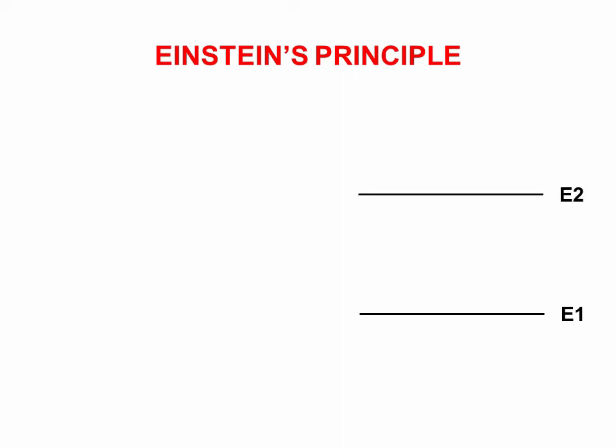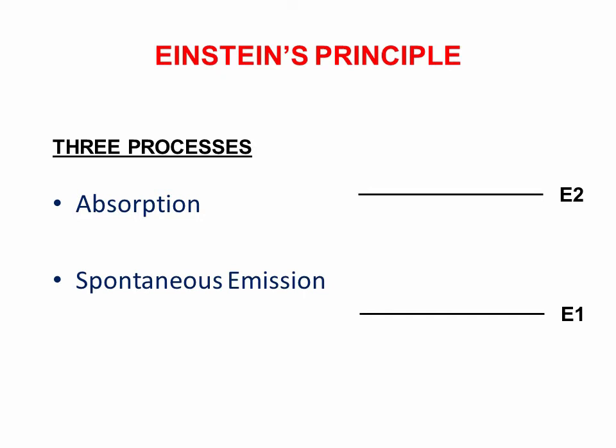When the atom is exposed to light, that is photon of energy, there are three distinct processes that take place. They are absorption, spontaneous emission, and stimulated emission.